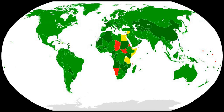The Convention on the Prohibition of the Development, Production and Stockpiling of Bacteriological and Toxin Weapons and on their Destruction, usually referred to as the Biological Weapons Convention (BWC) or Biological and Toxin Weapons Convention (BTWC), was the first multilateral disarmament treaty banning the production of an entire category of weapons. The Convention was the result of prolonged efforts by the international community to establish a new instrument that would supplement the 1925 Geneva Protocol.